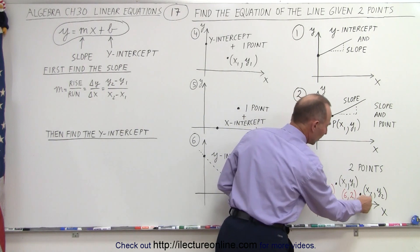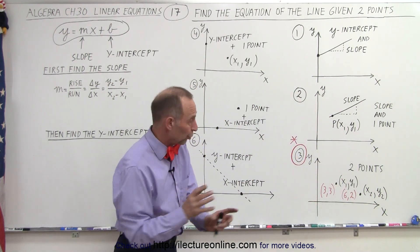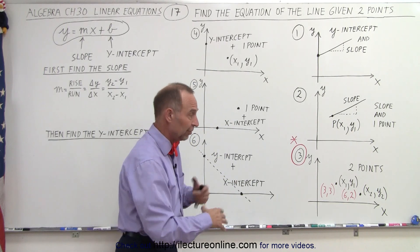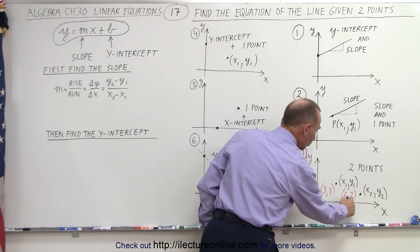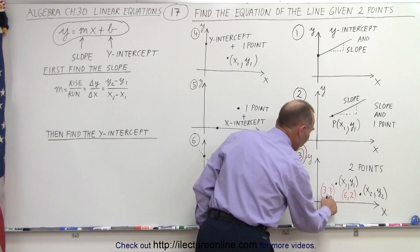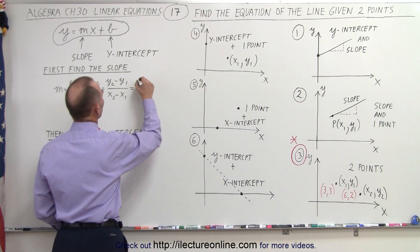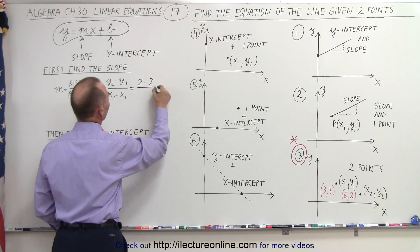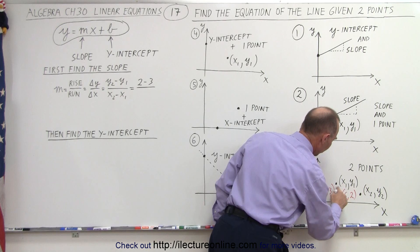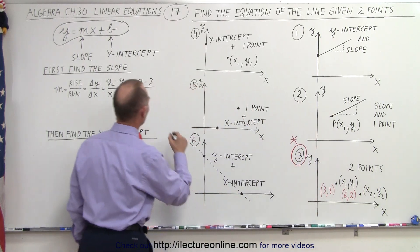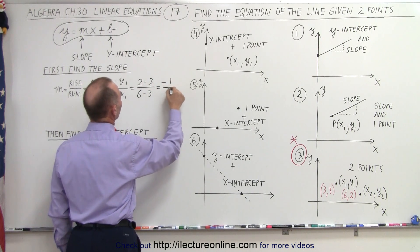Here is x2 and y2, there is x1 and y1, and it really doesn't matter which order you do it in — you can reverse them and you'll get the very same result. So here we have y2 which is 2, minus y1 which is 3. This becomes 2 minus 3 divided by x2 which is 6 minus x1 which is 3, so we get 6 minus 3. And that gives us minus 1 over 3, and that's the slope.